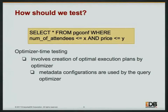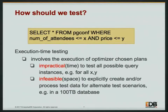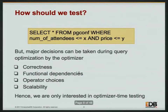Now we know what to test — but how should we test? Should we test during optimizer time, generating different plans for different values of X and Y to see what type of plan is generated? Or should we test at execution time — generating and executing different plans with different database sizes? Testing at execution time is really impractical because of time and infeasible because of space. But most decisions about an operator can be taken during optimizer time: correctness, functional dependencies, operator choices, and scalability. So we are more interested in optimizer-time testing.